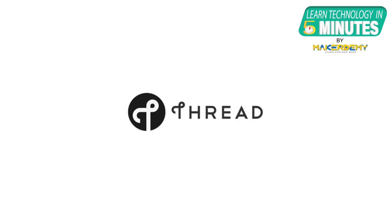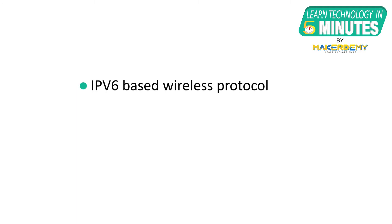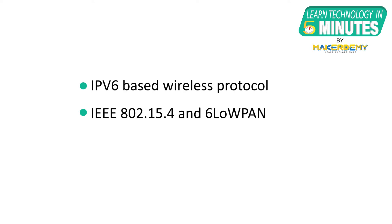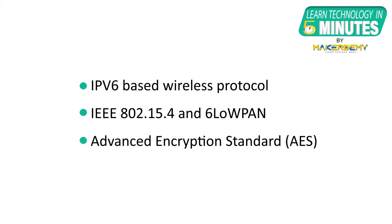The Thread protocol is an IPv6-based wireless networking protocol specifically designed for low-power connected devices in the home automation space. It is based on IEEE 802.15.4 and 6LowPAN protocol and uses the Advanced Encryption Standard. Thread protocol is a mesh-based protocol, and a Thread mesh network can support up to 250 nodes.